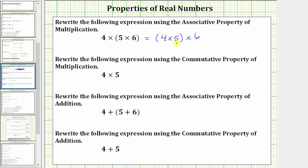Notice here, we have grouping symbols or parentheses around the product four times five. To verify this property is true, let's simplify both sides following the order of operations.